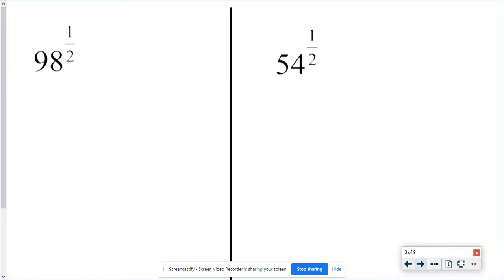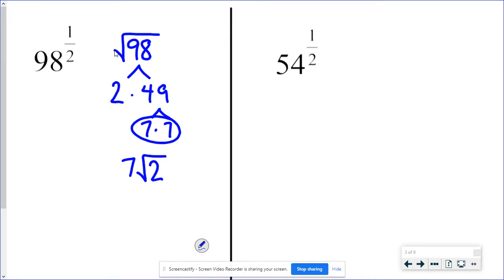These are not perfect squares. 98 to the one-half would be the square root of 98. Now, 98 is even. I know that doesn't divide evenly by four, but it does divide by two. This would be two times 49. And 49 is going to be seven times seven, right? There's my pair, but two doesn't match up with anything. So the seven breaks out, and two is left. We stop with radical form. We don't go back into fraction exponents. We want these as simplified radicals.